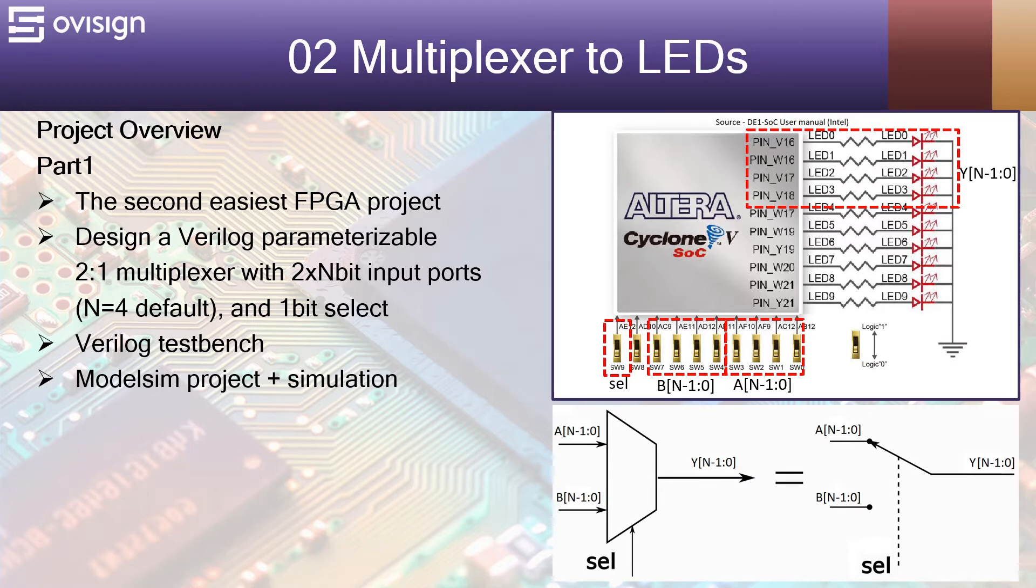Let's analyze now how we are going to connect this project with our FPGA. We are going to use 1 bit for the select and two 4 bit buses for A and B.